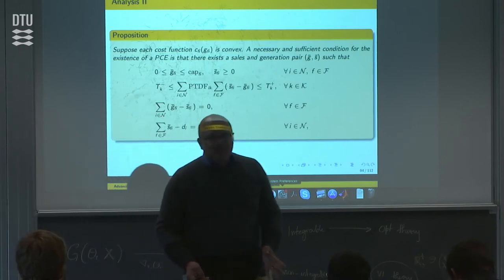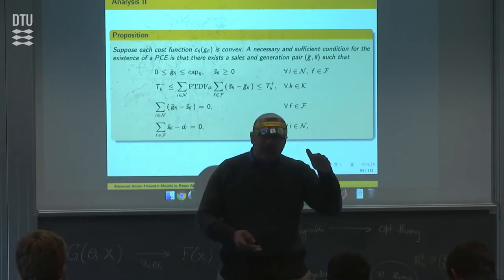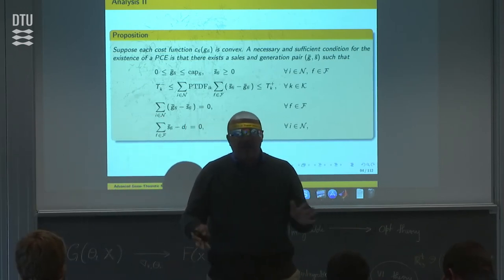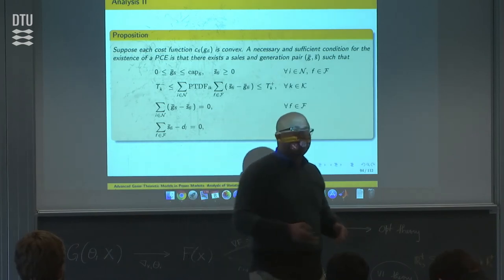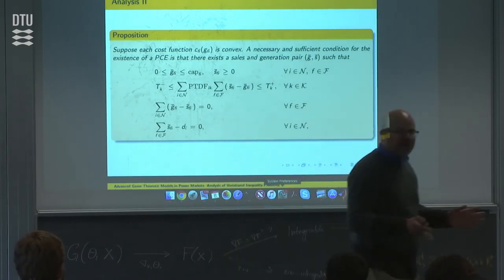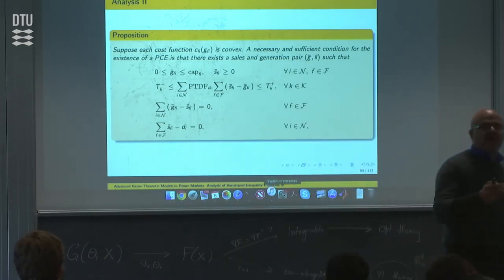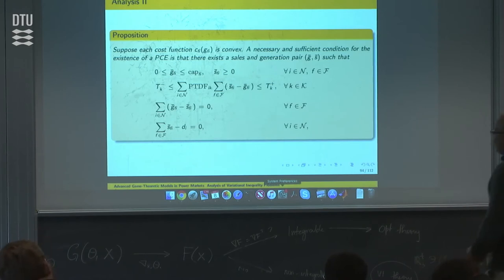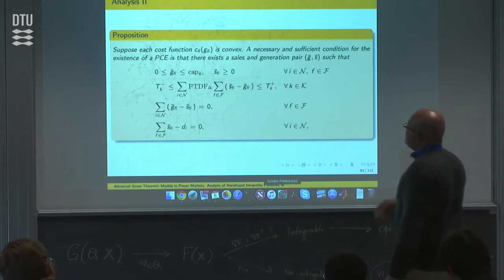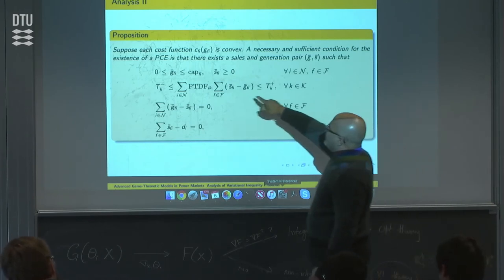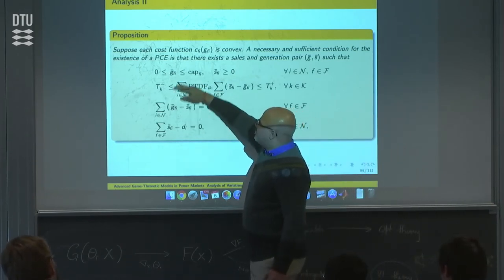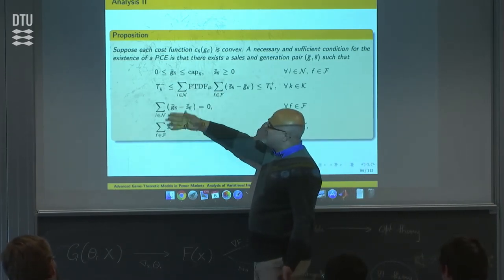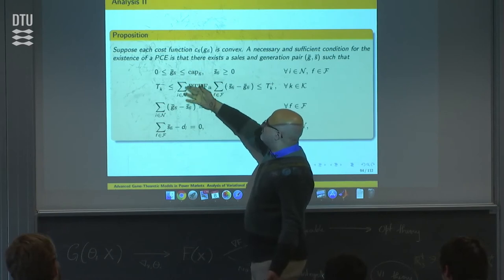A necessary and sufficient condition for the existence of a perfectly competitive equilibrium is just that this feasible region be non-empty. That's it—from linear programming theory. If you have a linear optimization problem, all you need is a feasible solution.